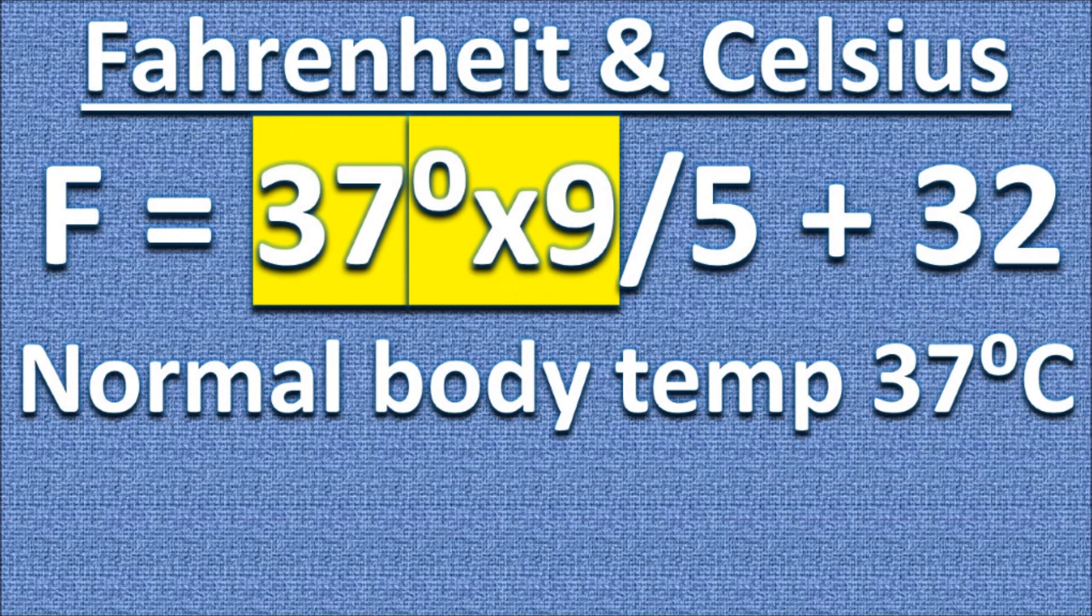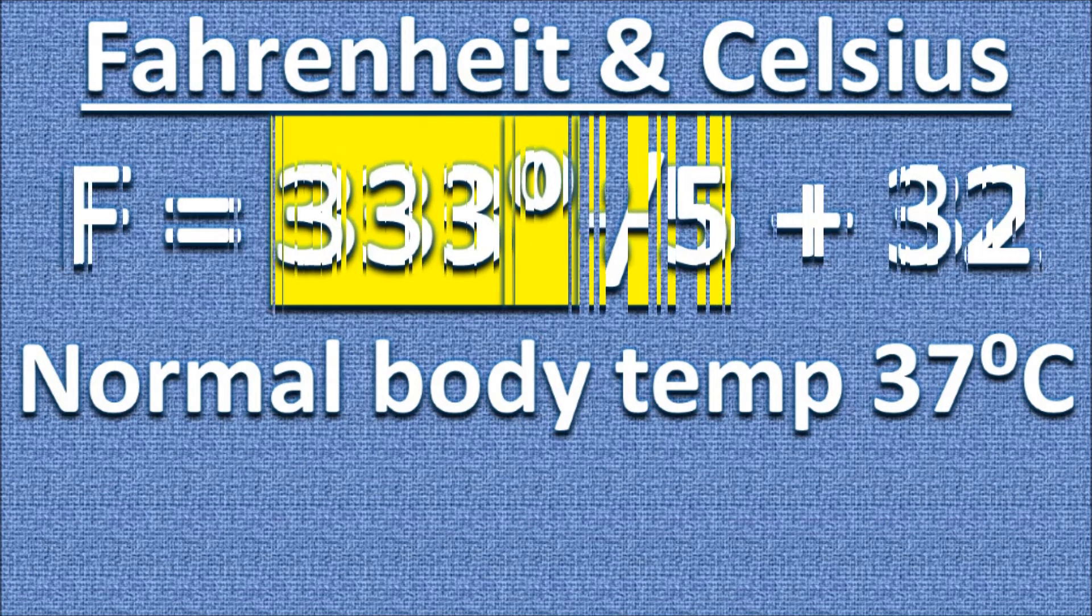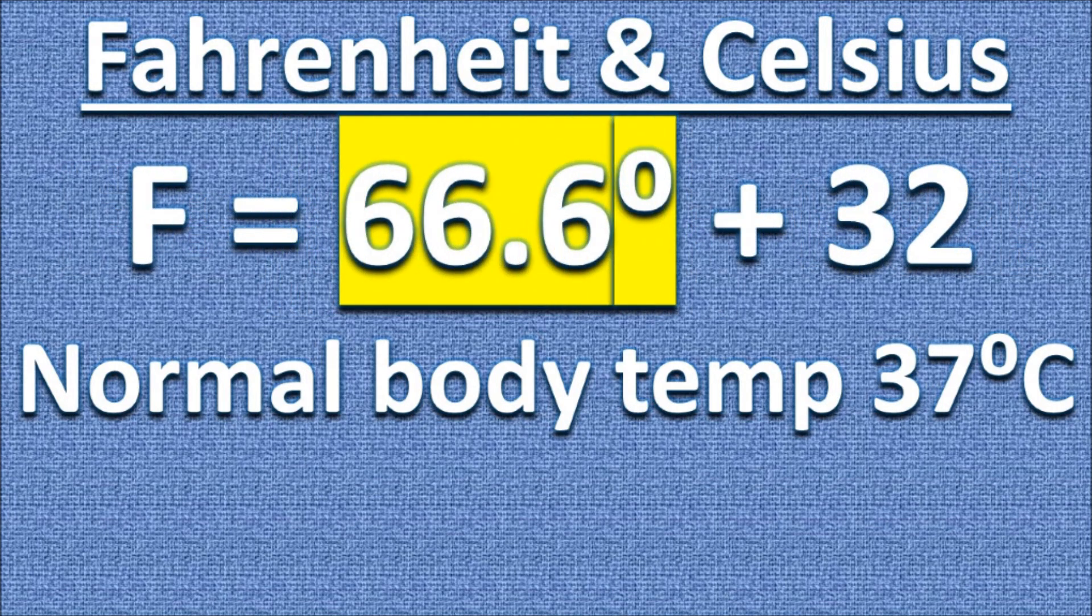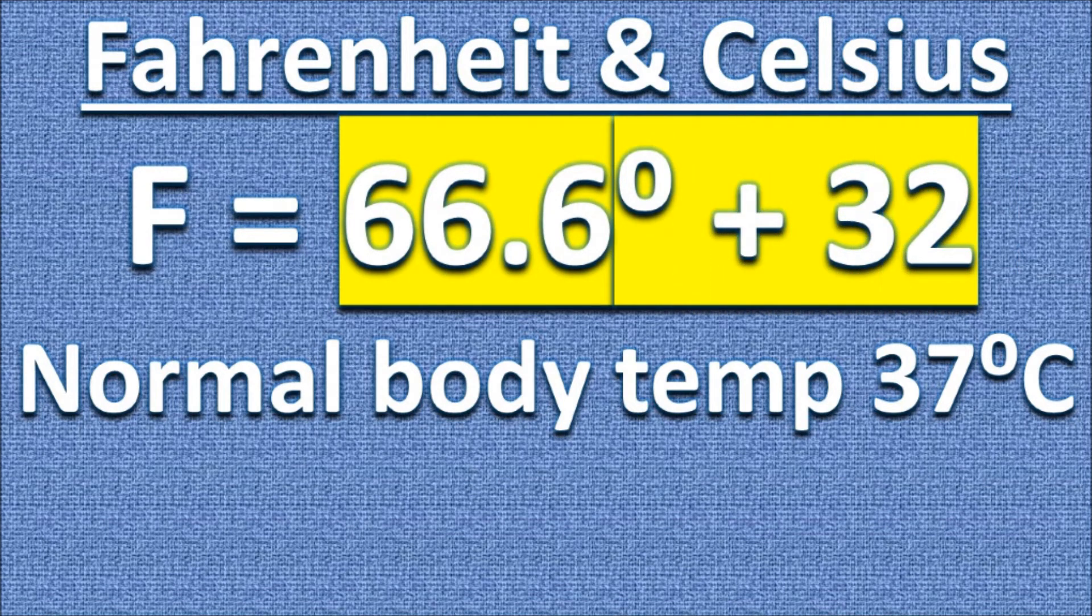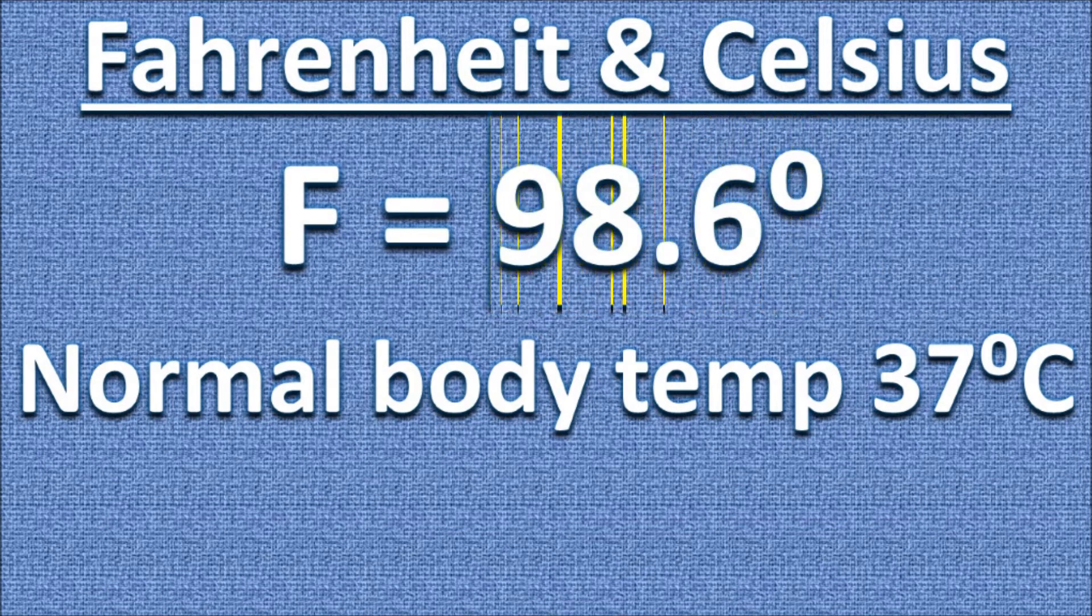Next, we multiply by 9. We divide by 5. Last, we add 32, which gives us 98.6 degrees in Fahrenheit.